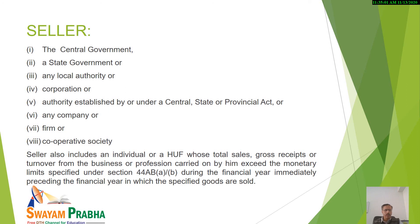Seller also includes an individual or HUF. But what is the provision? We will include those individuals and those HUFs whose total sales, gross receipts or turnover from the business or profession carried on by them exceed the monetary limits specified under section 44AB during the financial year immediately preceding the financial year in which the specified goods are sold.